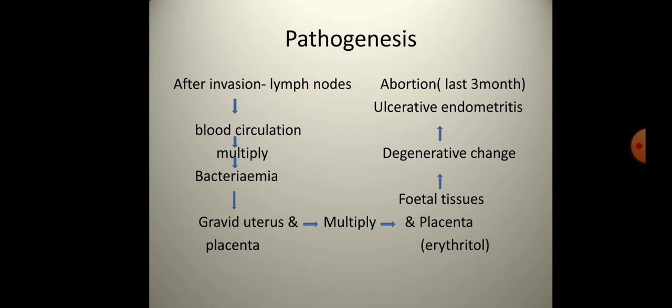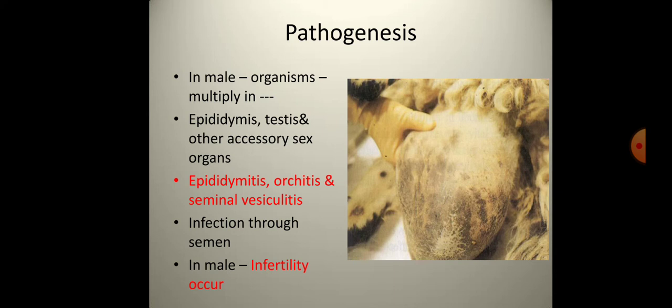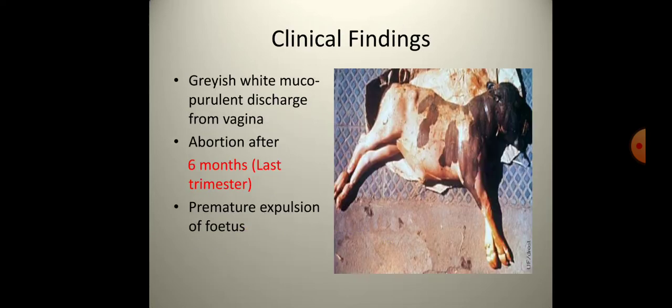When necrosis occurs between the cotyledon and caruncle, the connection between the fetus and maternal tissues is lost, so maternal nutrients and oxygen cannot pass to the fetus, resulting in fetal death and abortion due to erythritol. In males, the organism multiplies in the epididymis, testes, and other accessory sex organs, causing epididymitis or orchitis, seminal vesicle infection, and male infertility.